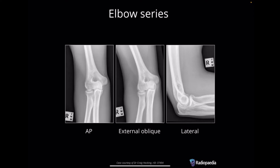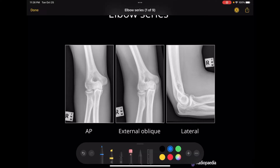This video is going to be an MEG evaluation video of the elbow. When we do an elbow, we normally do an AP, an external oblique, and a lateral.